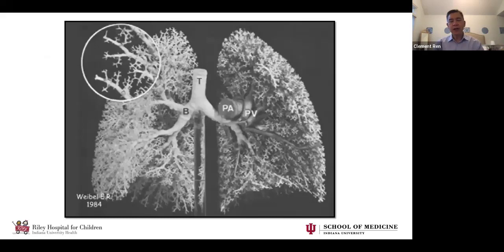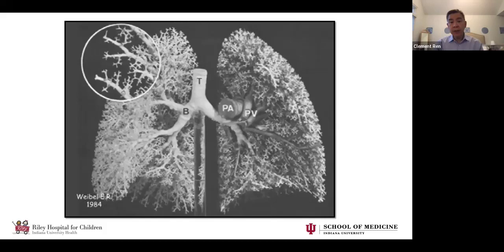Let's think about what happens every time we take a breath. Most of that air spends its time going to places like the trachea and the conducting airways where it doesn't involve gas exchange at all. And then, as shown in this figure by Weibel, a famous pulmonary anatomist, a tiny bit of that air travels all the way down to our terminal bronchioles and alveoli, where it mixes with that gas and is exhaled. With each breath, some of the gas way out in the periphery gets mixed, exchanged, and exhaled.